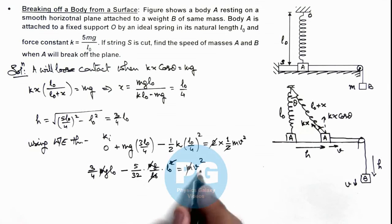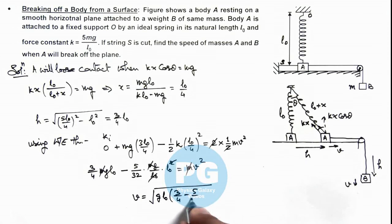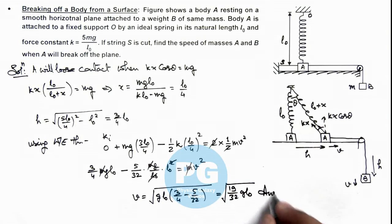Further simplifying, the speed is v = √[gl₀(3/4 - 5/32)] = √[gl₀(24/32 - 5/32)] = √(19gl₀/32), and that is the final result of this problem.